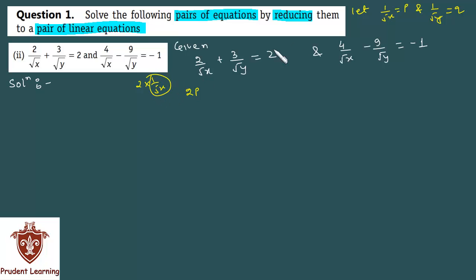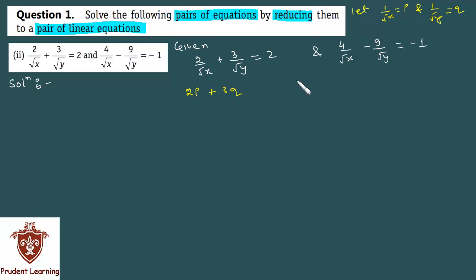If we assume p equals 1 by root x, then 2 by root x becomes 2p. Similarly, 3 upon root y becomes 3q, because 1 by root y is equal to q. So the first transformed equation is 2p plus 3q is equal to 2.